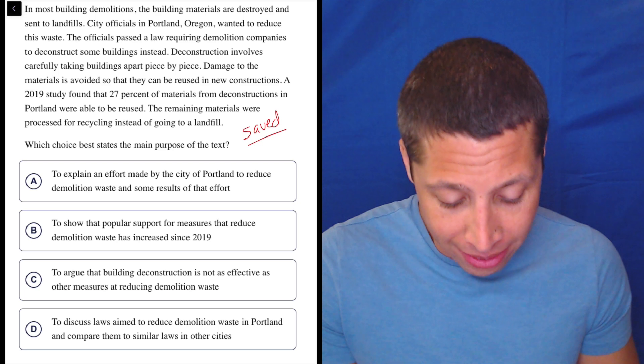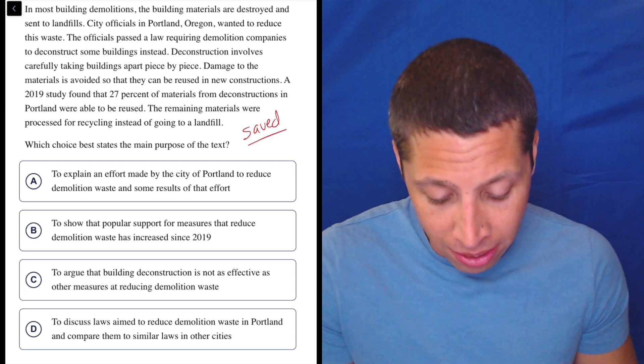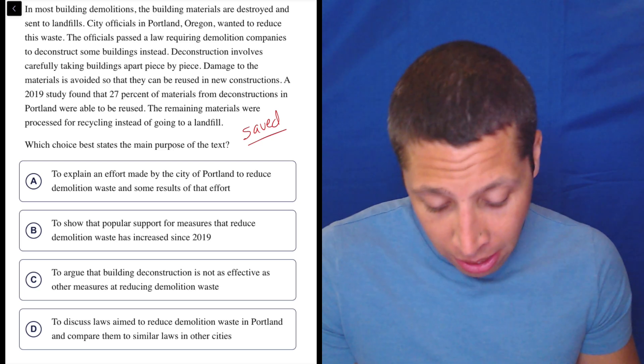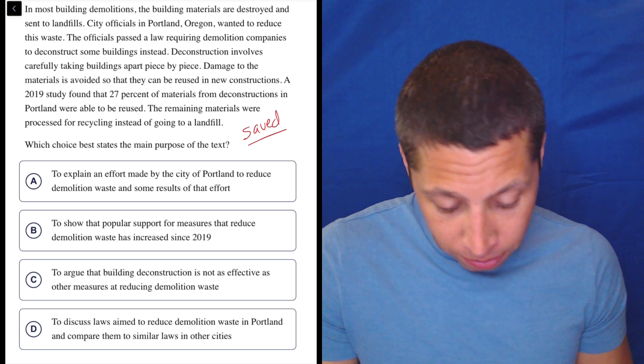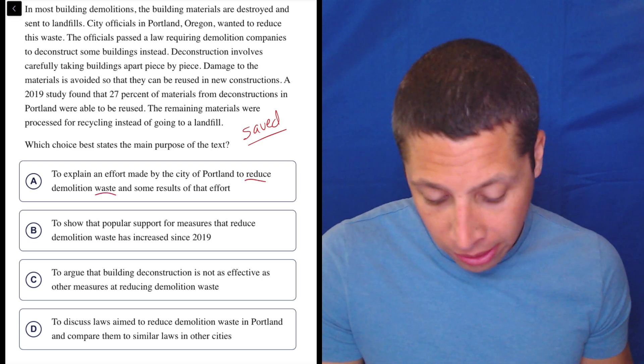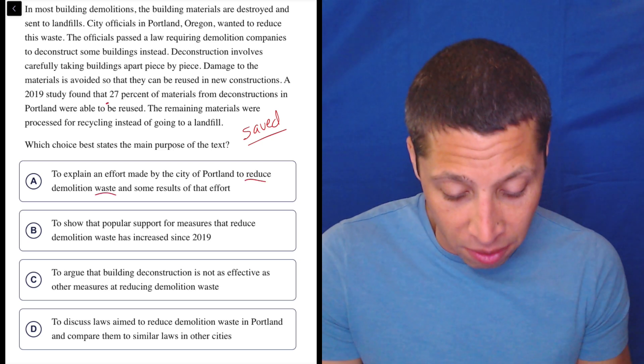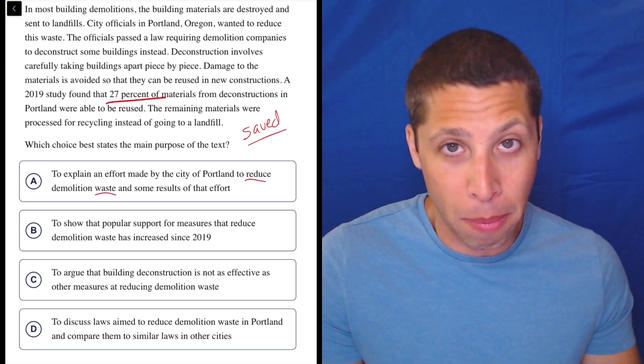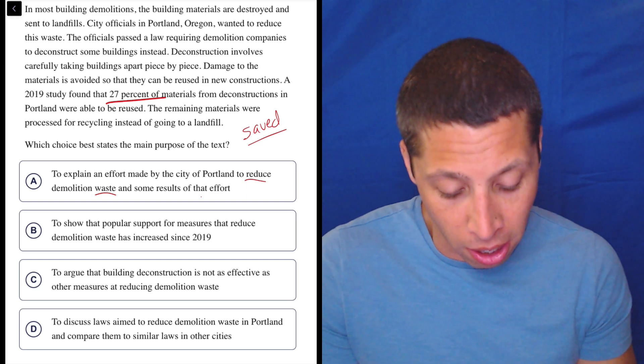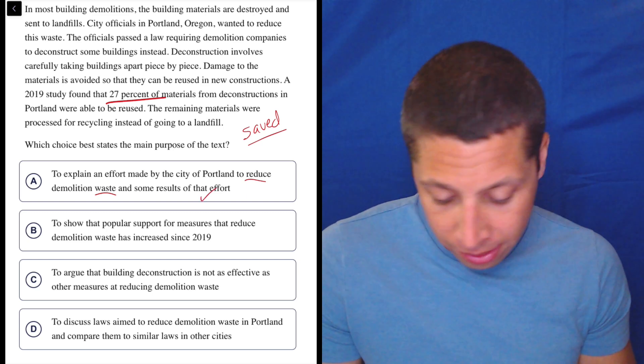A, to explain an effort made by the city of Portland to reduce demolition waste and some results of that effort. Yeah, okay. They are reducing waste, so they're saving things, and the result is that 27% of materials from deconstructions are reused. Yeah, okay. All this checks off, right? So it seems right.